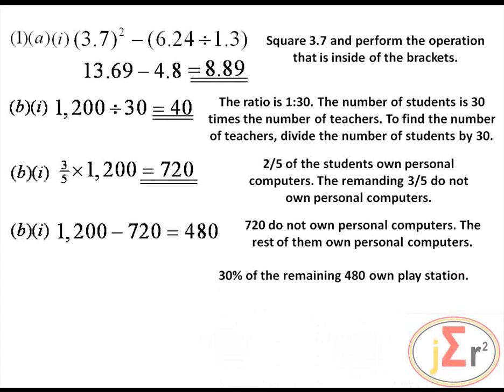30% of the 480 who own PCs also own PlayStations. 30% is 30 divided by 100, which gives 0.3. So 0.3 multiplied by 480 gives 144. That is the number of students who own PlayStations.